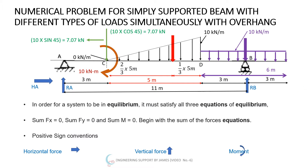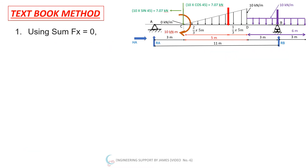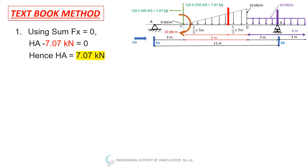Using the regular textbook method, starting with summation of forces in the X direction equal to zero: HA (positive, left to right) minus 7.07 kN (horizontal component, left to right) equals zero. Solving this equation gives HA = 7.07 kN.